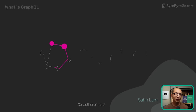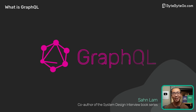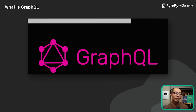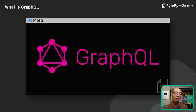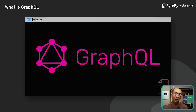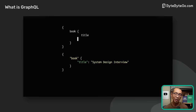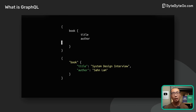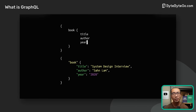What is GraphQL? When should we use it? Let's take a look. GraphQL is a query language for APIs developed by Meta. It provides a schema of the data in the API and gives clients the power to ask for exactly what they need.